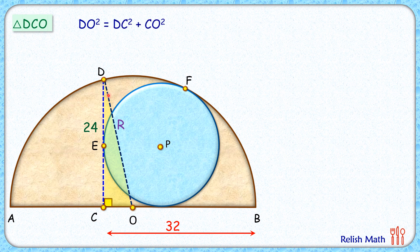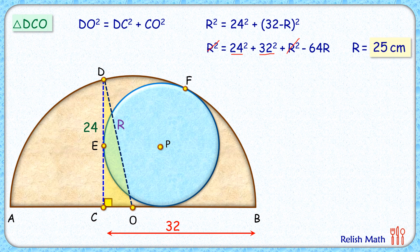So we will put value of DO as capital R, DC as 24. How about CO? CO will be 32 minus capital R. So putting these values here, opening the bracket on RHS, simplifying this, R squared will get cancelled on both sides. 24 squared plus 32 squared, that is 40 squared. So when you solve this, you will get capital R as 25 centimeters.